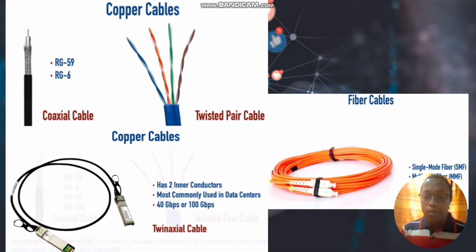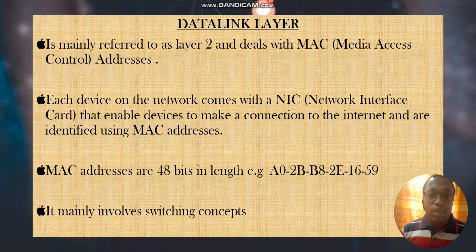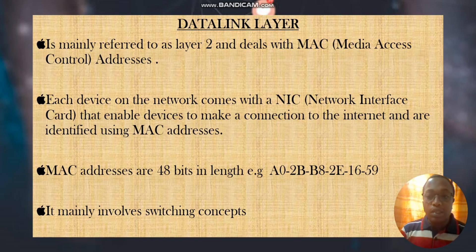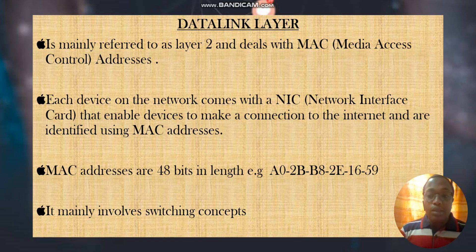Now let's move to the second layer, which is the Data Link layer, also referred to as Layer 2. It deals with MAC addresses — Media Access Control addresses — which are found on the network interface card of each device that is able to connect to the internet or to a network. A MAC address is 48 bits in length, as shown on the screen. In the Data Link layer, we mainly talk about switching concepts, which we will cover in a later video.